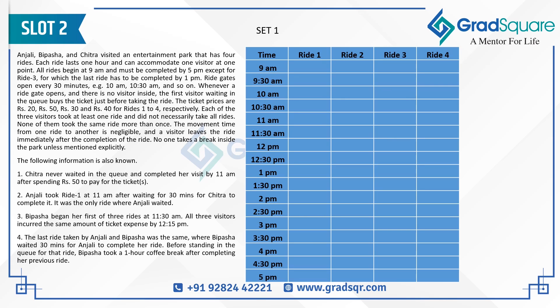All rides must end by 5 pm, so none can start at 4:30 pm since each ride lasts 1 hour — meaning all rides must start by 4 pm. For Ride 3, since it must be completed by 1 pm, it must start by 12 pm and cannot start at 12:30 pm. So from 12:30 pm onward there is no Ride 3.